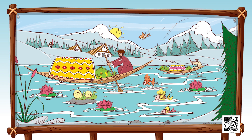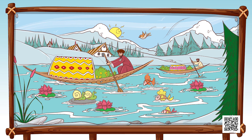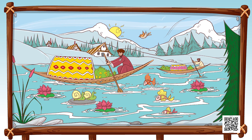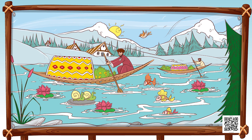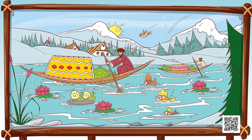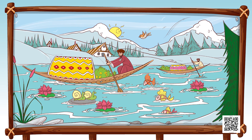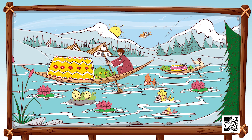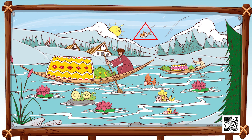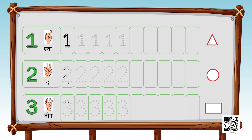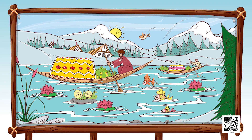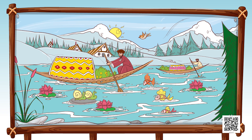Oh, look at that — it is such a beautiful picture! We see sun, mountains, boats, and lotus flowers. All you have to do is look at the picture carefully and do as directed. Let's draw a triangle around the objects which are one in number. You see a bird, right? So draw a triangle around the bird and write one on your sheets. Next, draw a circle around the objects which are two in number and write down two.